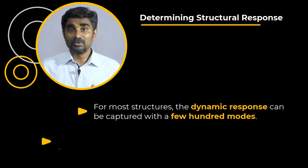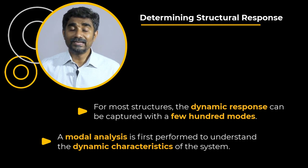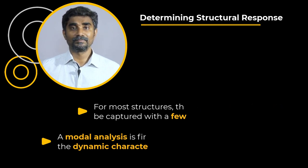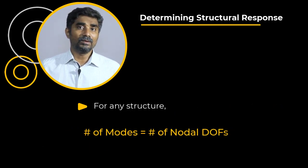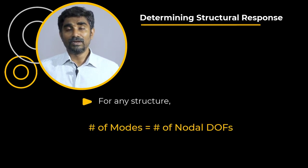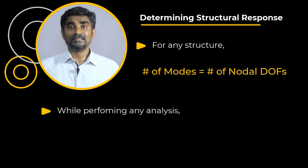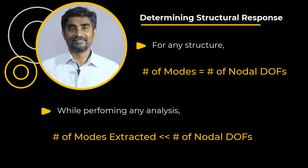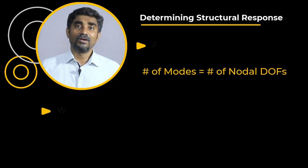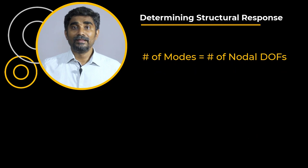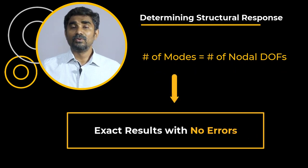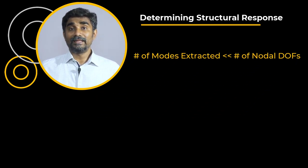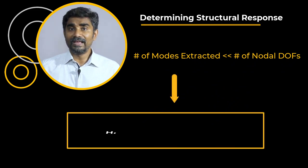We usually perform a modal analysis first to understand the dynamic characteristics of our system, so we already have the model information. For any structure, the total number of modes is equal to the number of nodal DOFs. But while performing any analysis, we extract modes far less than this number due to computational constraints. If we extract all the modes present in the numerical model, it would lead to exact results with no numerical errors. However, even if we extract fewer modes that appropriately capture the structure's response, we will still get highly accurate results.